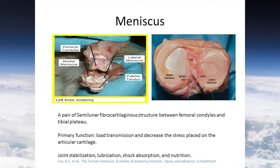This is a simple anatomy of the meniscus. It's a pair of semi-lunar fibrocartilage structures between the femoral condyles and the tibial plateau. It can be divided into the medial meniscus and the lateral meniscus. The primary function of the meniscus is load transmission — it can decrease the stress placed on the articular cartilage and prevent it from damage. It can also stabilize the joint and provide lubrication, absorption, or nutrition for the knee joint.